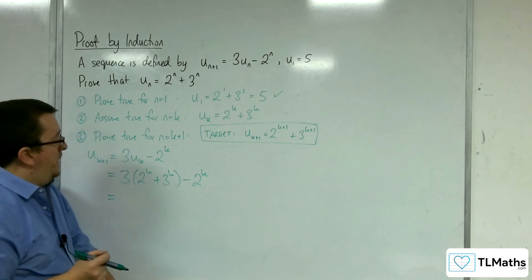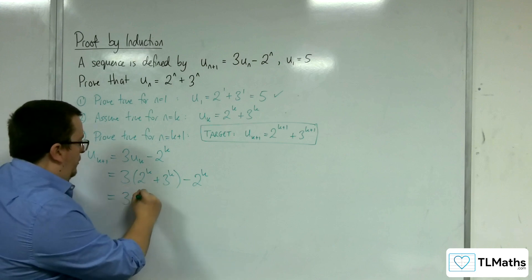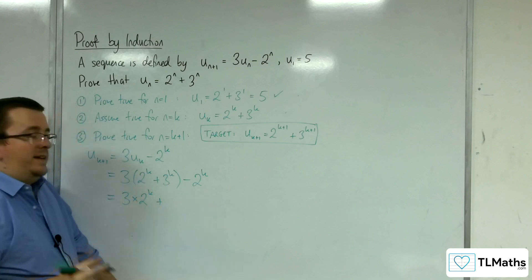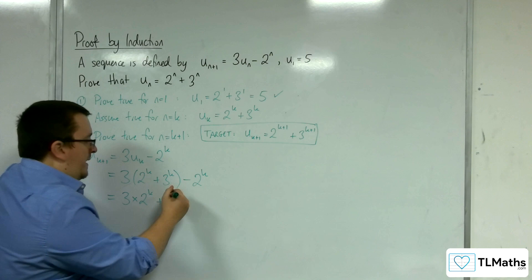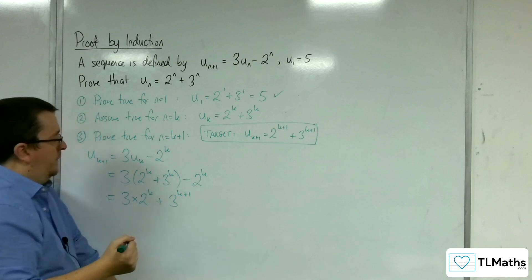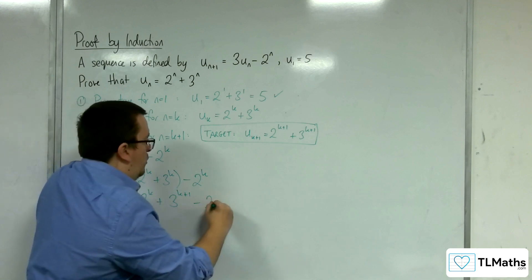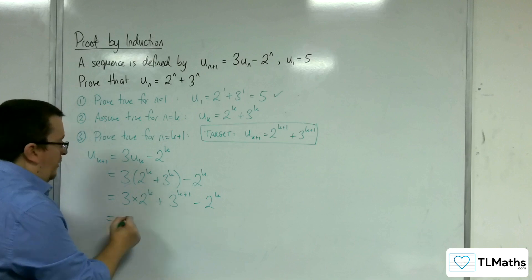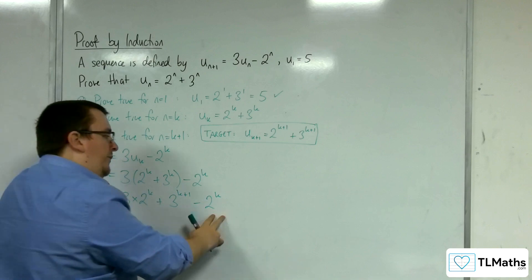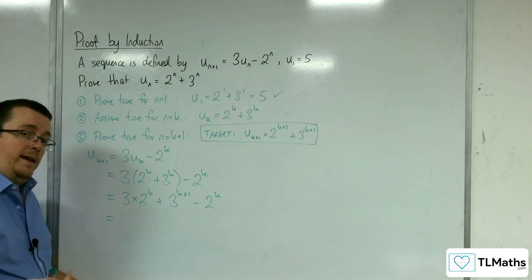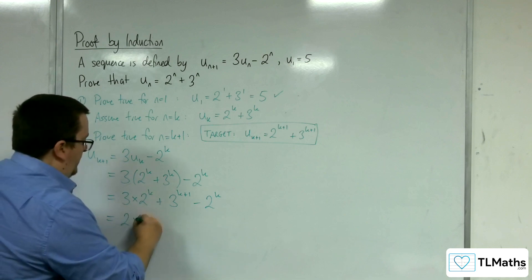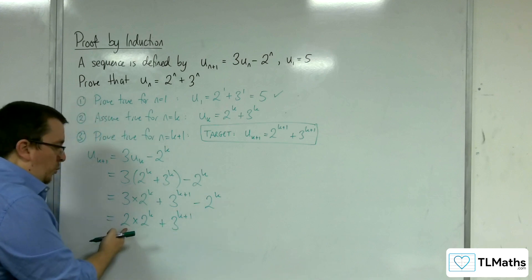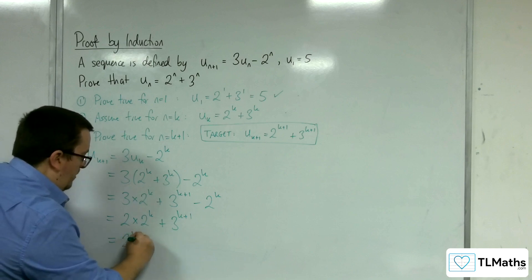Expanding out, we've got 3 lots of 2^k plus 3 lots of 3^k. Now, 3 lots of 3^k is 3^1 times 3^k, so that's 3^{k+1}. And we've got this take away 2^k on the end. Now, because we've got 3 lots of 2^k and we're taking away 1 lot of 2^k, that means we've got 2 lots of 2^k left. And 2 is 2^1, so 2^1 times 2^k gives 2^{k+1}.